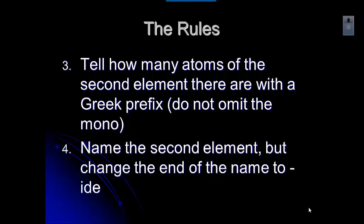And then name the second element, but we change the end of the name to ide, which is kind of like what we did in the ionic compounds. We change the end of the element name to ide. So chlorine becomes chloride, sulfur becomes sulfide, and so on. All right. There are a few exceptions, and I will expect you to know these. So make sure that you memorize them.